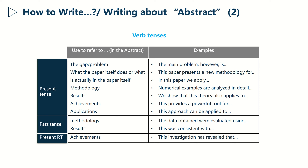Here on the right side of the table, we have some examples. Using the present tense: 'This paper presents a new methodology for...', 'In this paper, we apply...', 'This provides a powerful tool for...', 'This approach can be applied to...' Those are different examples of how the present tense is used to express the gap, the methodology, the results, the achievements, and the application in the abstract.